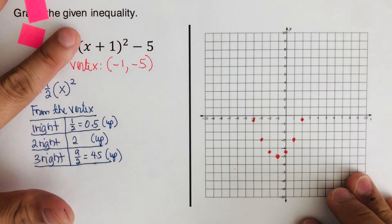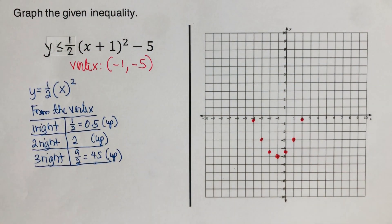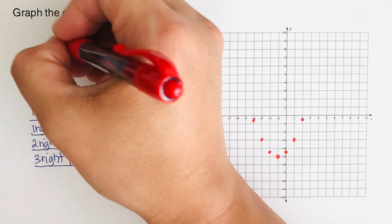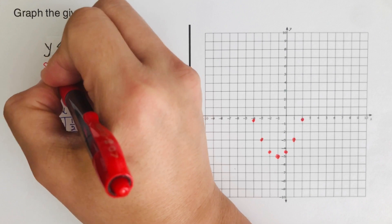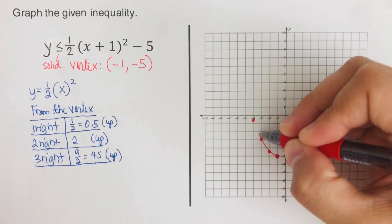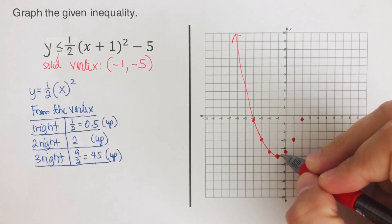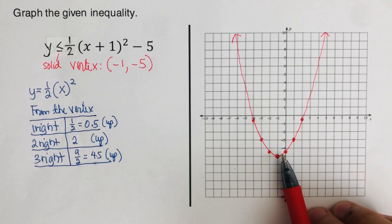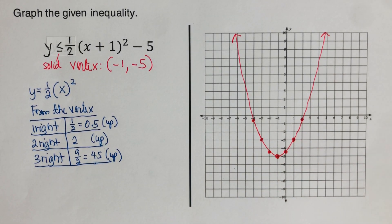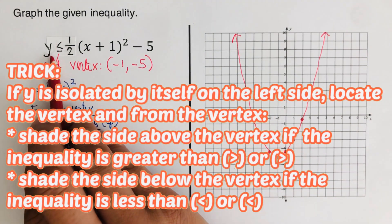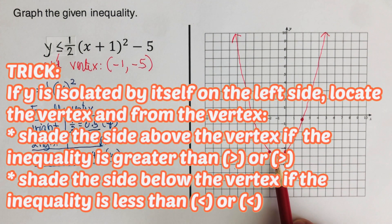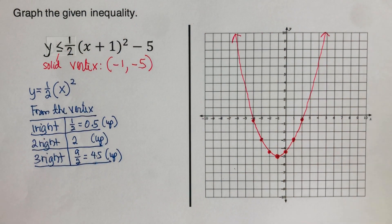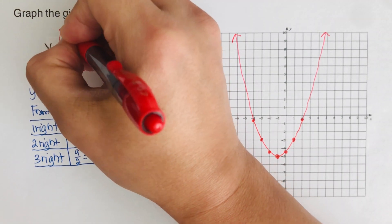Since there is a bar underneath the inequality symbol, we are going to use a solid graph. Using the shading trick: y is isolated on the left, and the inequality is less than or equal to, so we shade below the vertex.